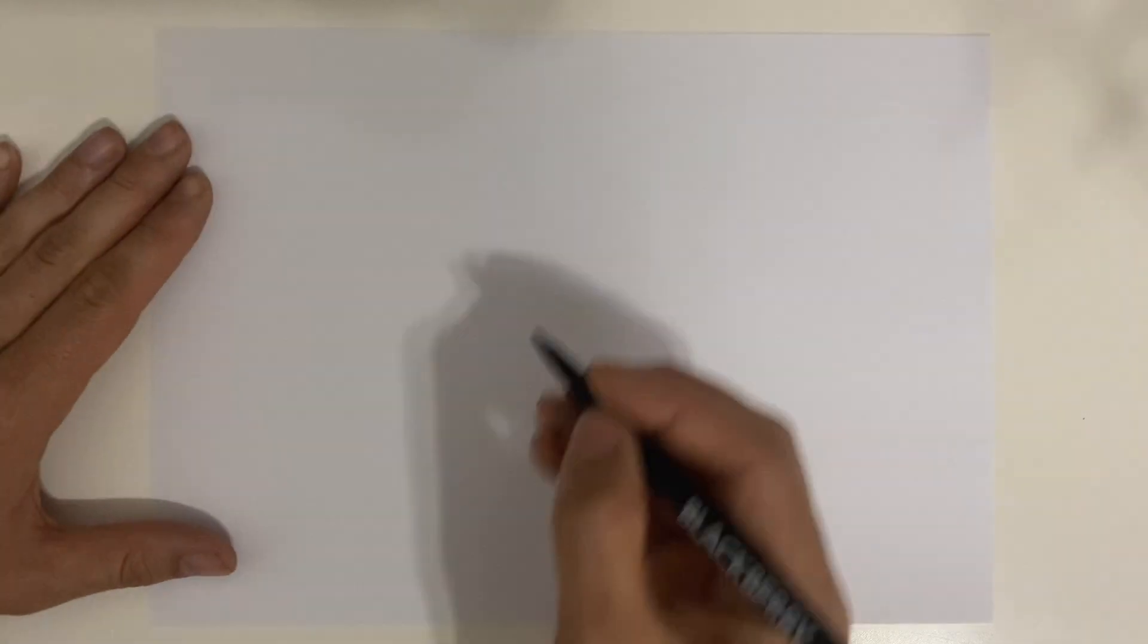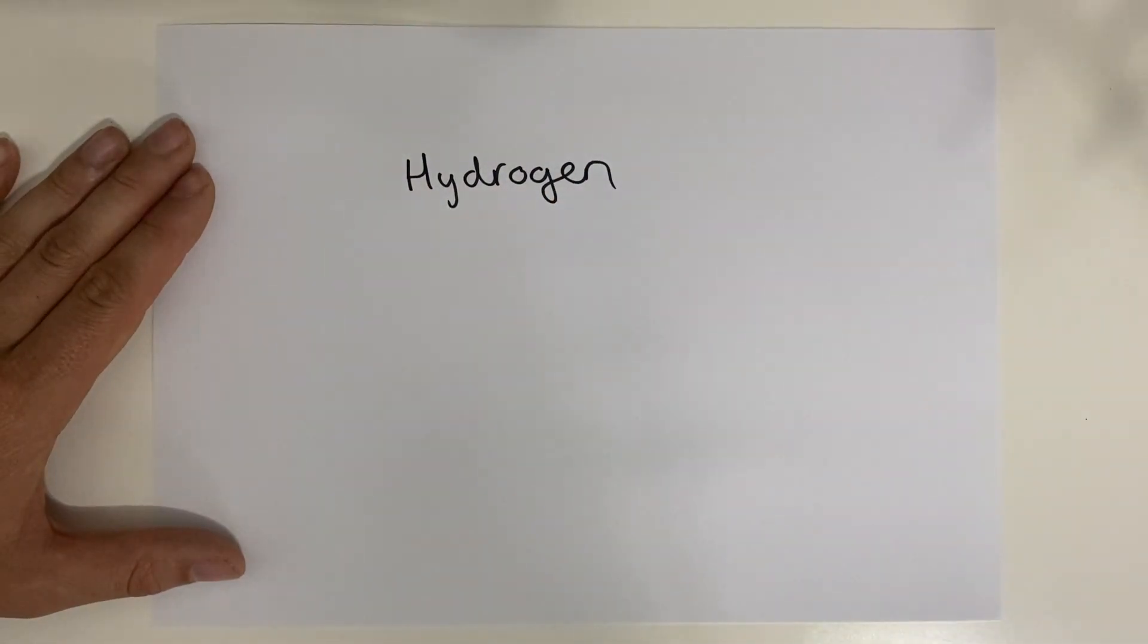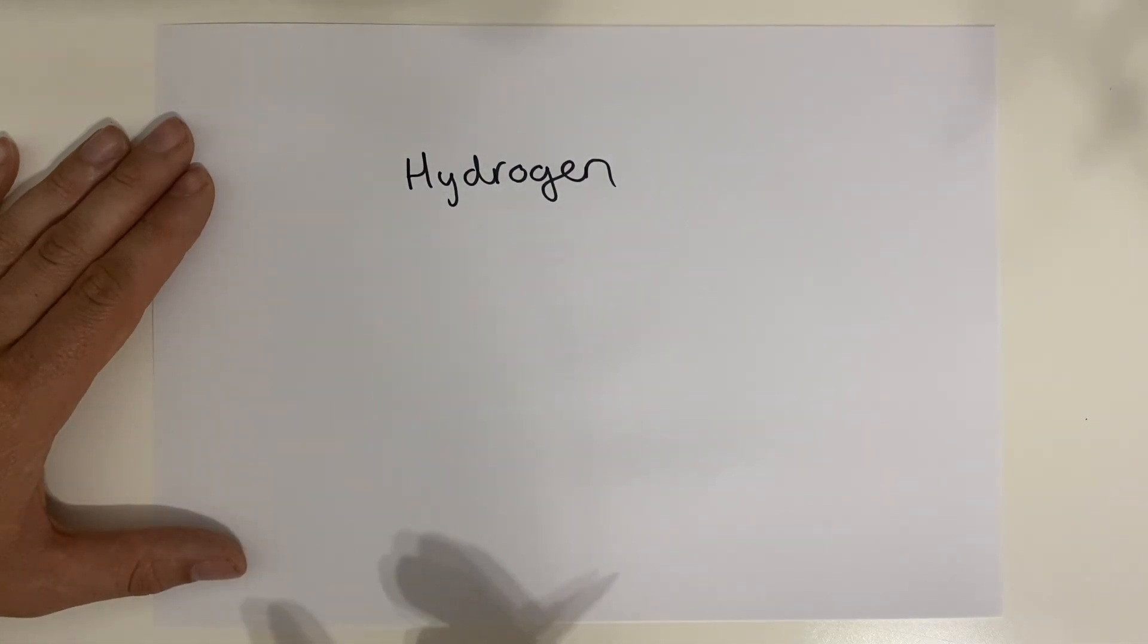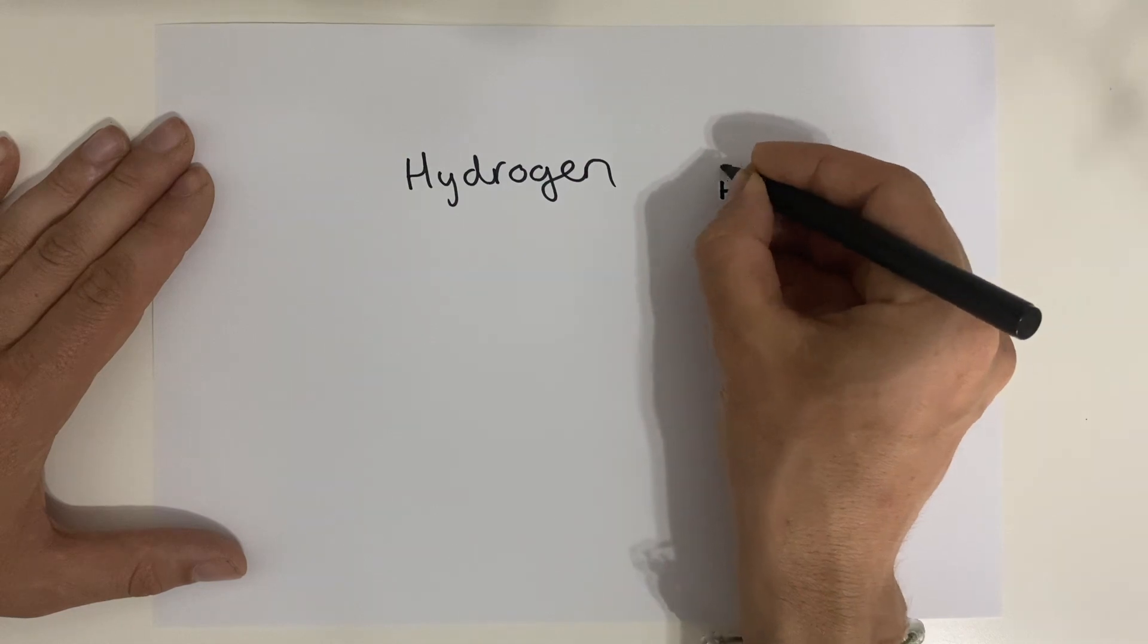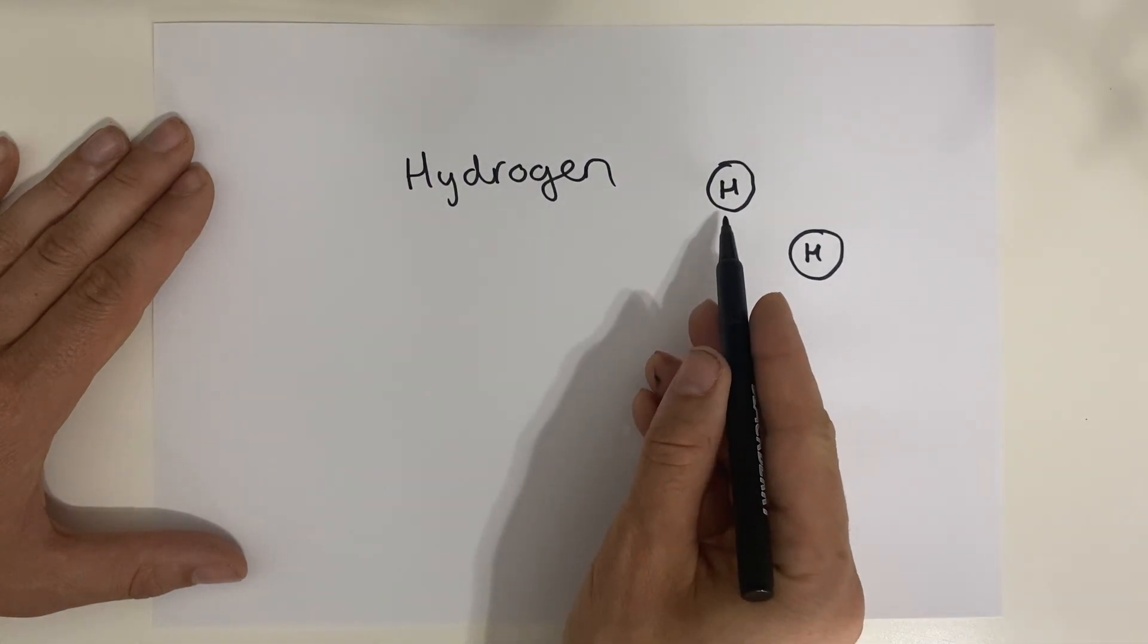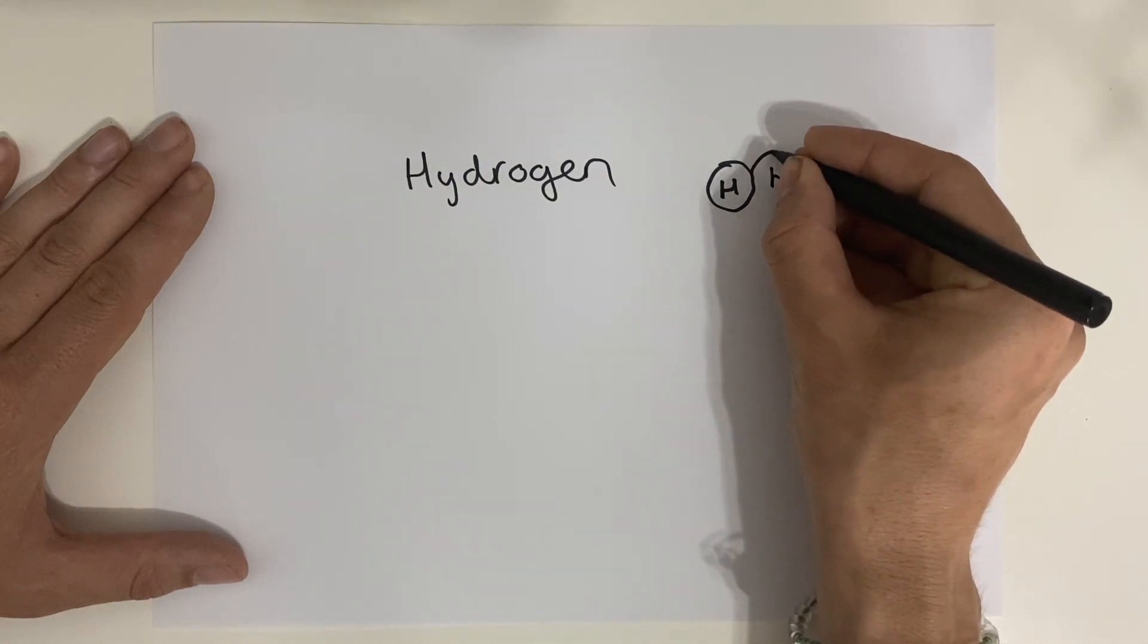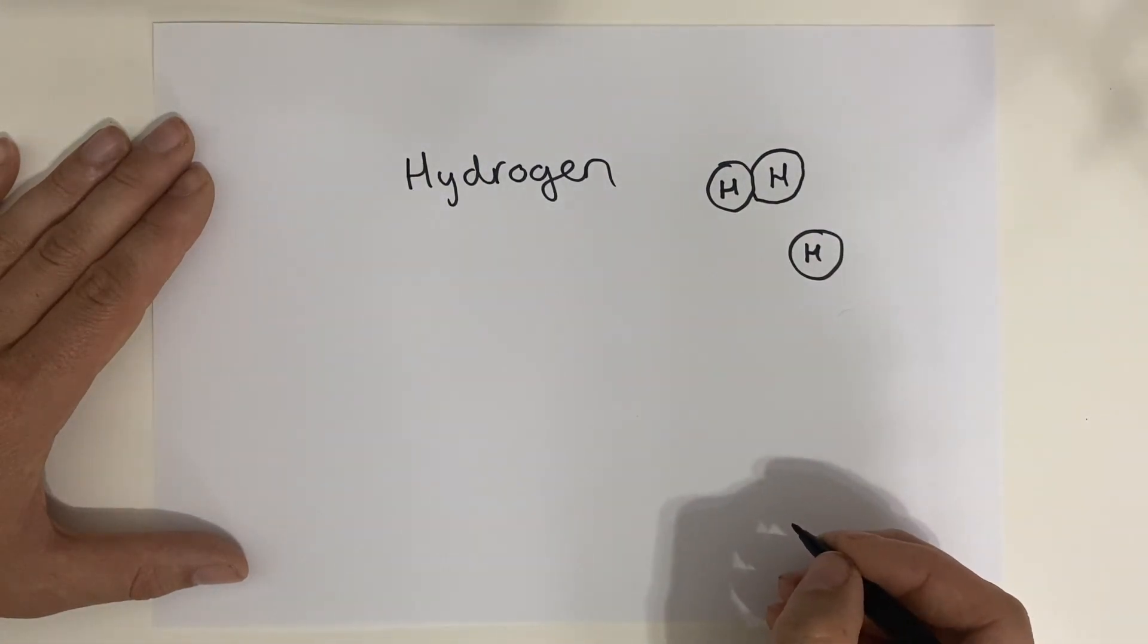Before we start looking at writing the equations, I want to talk about diatomic elements. There are seven of them in the periodic table, and you can think of these as lonely elements—they don't like to be by themselves. For example, hydrogen is a diatomic element. So if you ever had some hydrogen gas, you wouldn't have singular hydrogen atoms because they don't like to be by themselves. Instead, they're more stable paired up.